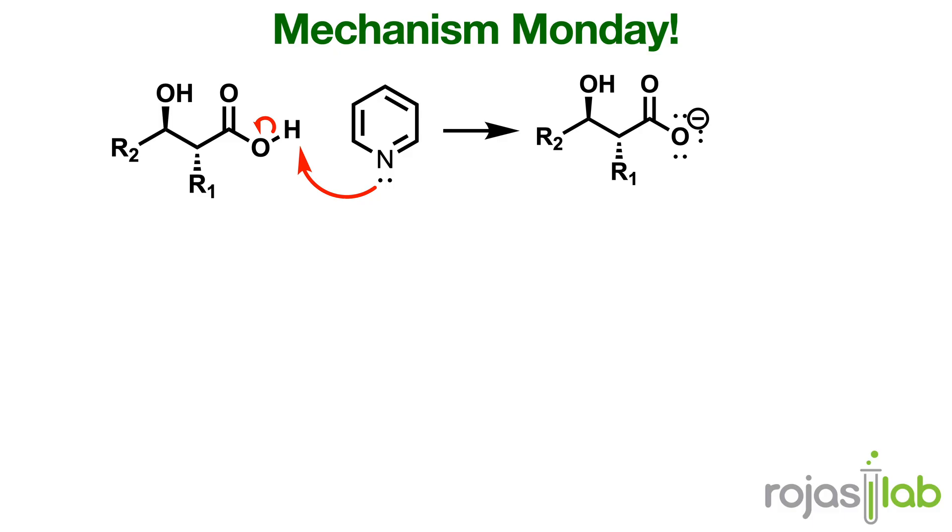Instead, an SN2 reaction can occur at that position to generate a very good leaving group in the form of this mesolate. And since we formed a very good leaving group, the neighboring alcohol can actually act as a nucleophile and do a displacement reaction where you kick off that mesolate group.